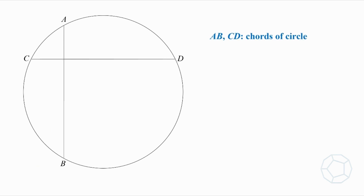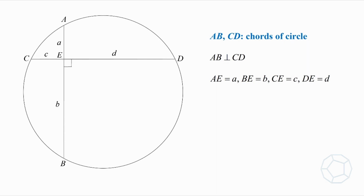A, B, C, and D are two chords of a circle. They are perpendicular to each other and they intersect at the point E. The lengths of the four line segments are small letters a, b, c, and d.